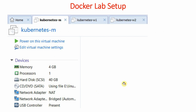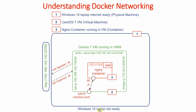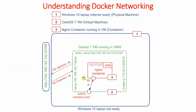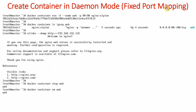We can stop the container and remove it. This was Docker networking — the container runs inside the CentOS VM which runs inside Windows 10. Understanding Docker networking is very important. Sometimes we want a fixed port mapping, because the problem with random port mapping is we don't want to use non-standard ports. Here we are using port 32768, and sometimes it might be 79 or 80 — so we want to fix the port mapping.